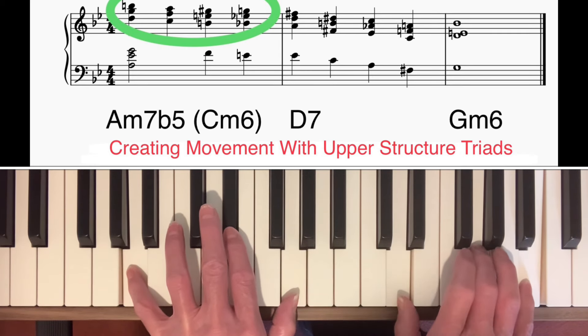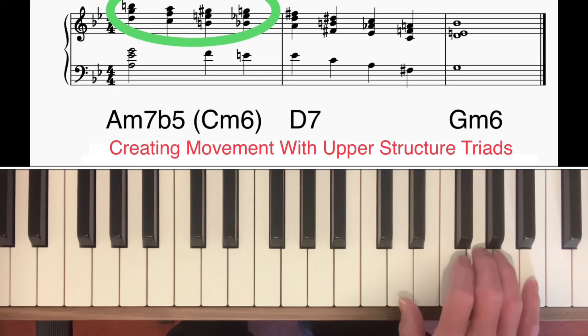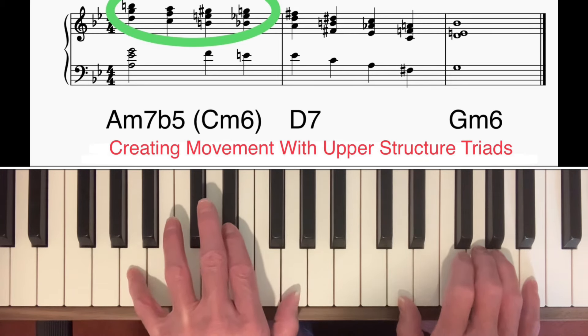Let's look at what I played in the right hand. I started off with that voicing. It's got a lot of tension in it. If we look at what I'm playing in the right hand on its own, it's a G major triad in 2nd inversion. So why does that work on an A minor 7 flat 5 chord?